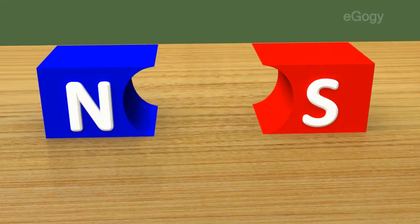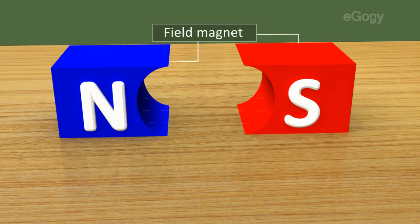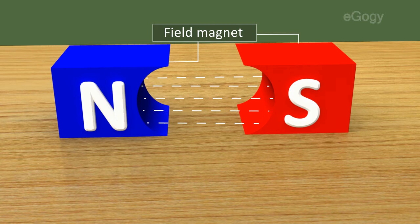The magnet which produces magnetic flux in generator is called field magnet. The direction of flux lines is from north pole of the field magnet to south pole.